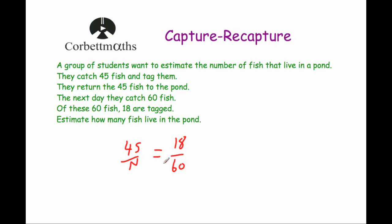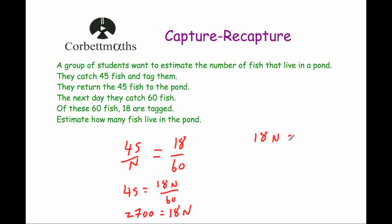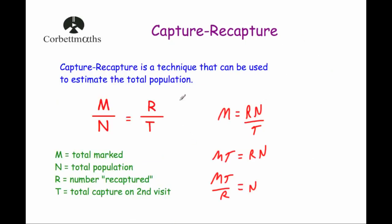We multiply both sides by N to get 45 equals 18N over 60. Multiplying both sides by 60: 45 times 60 equals 2,700 equals 18N. Dividing by 18 gives us N equals 150. So the estimated number of fish in the pond is 150. The capture-recapture technique is quite straightforward if you consider the proportions, and it's really useful to estimate how many animals or species might live in a particular area.